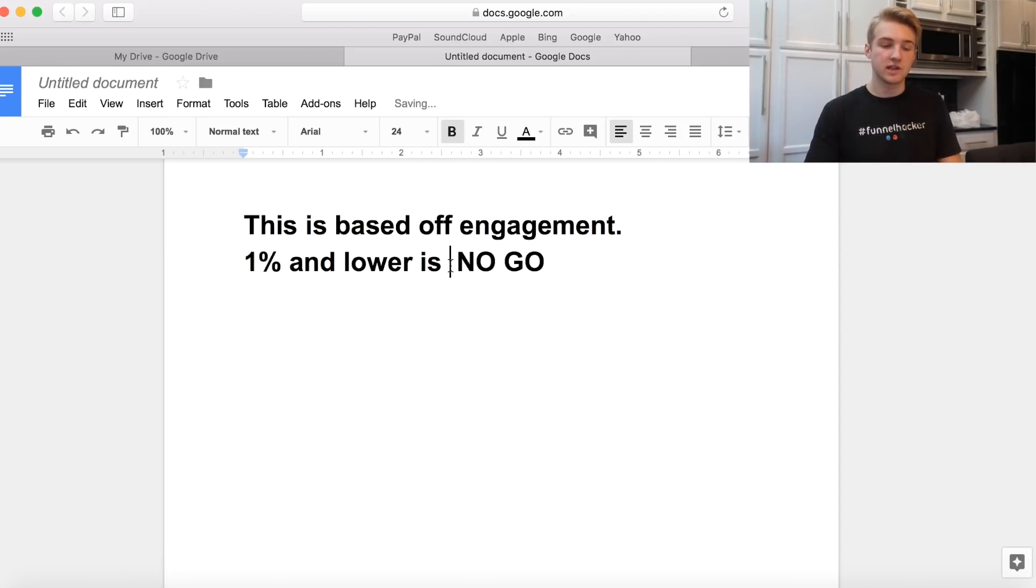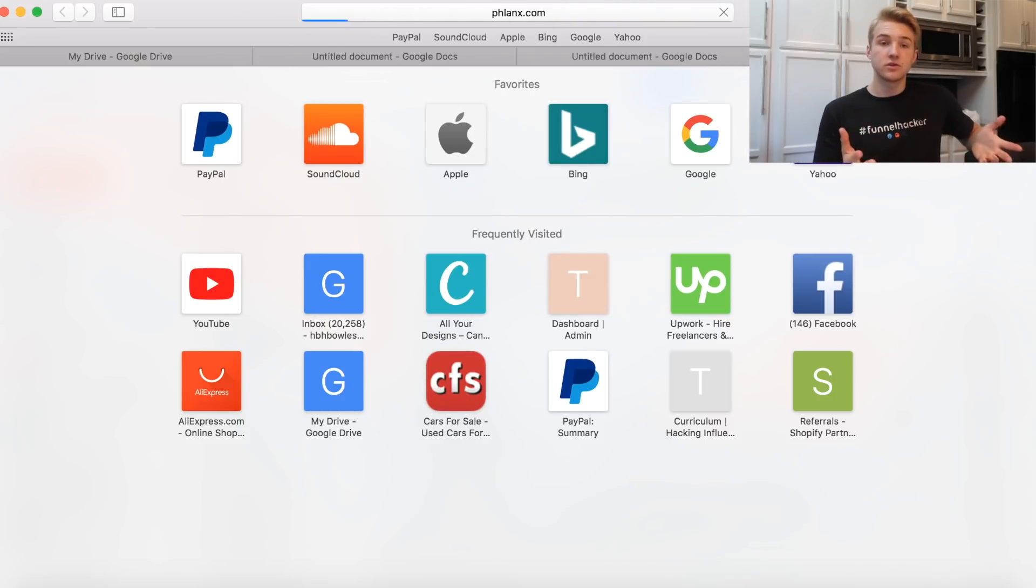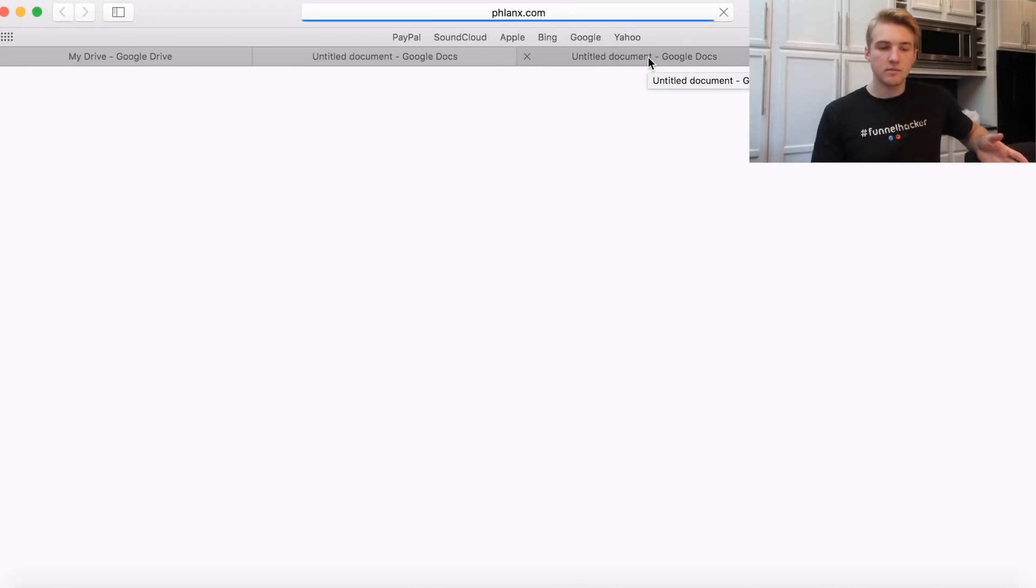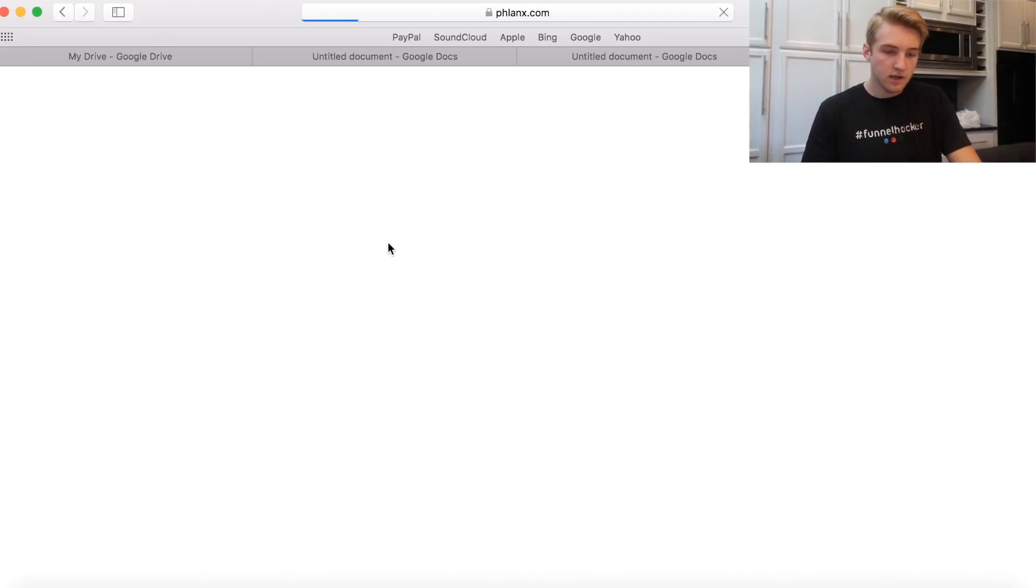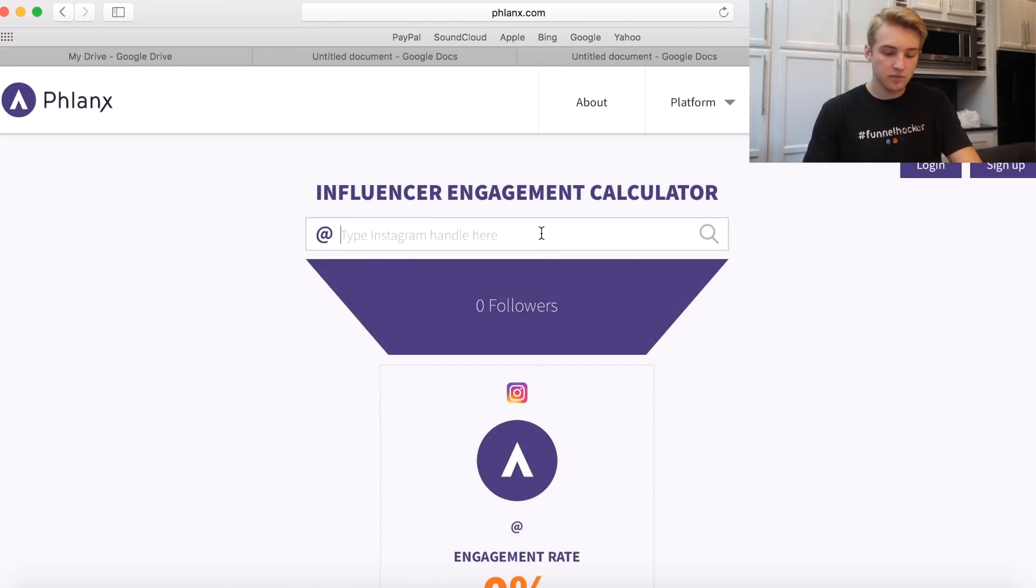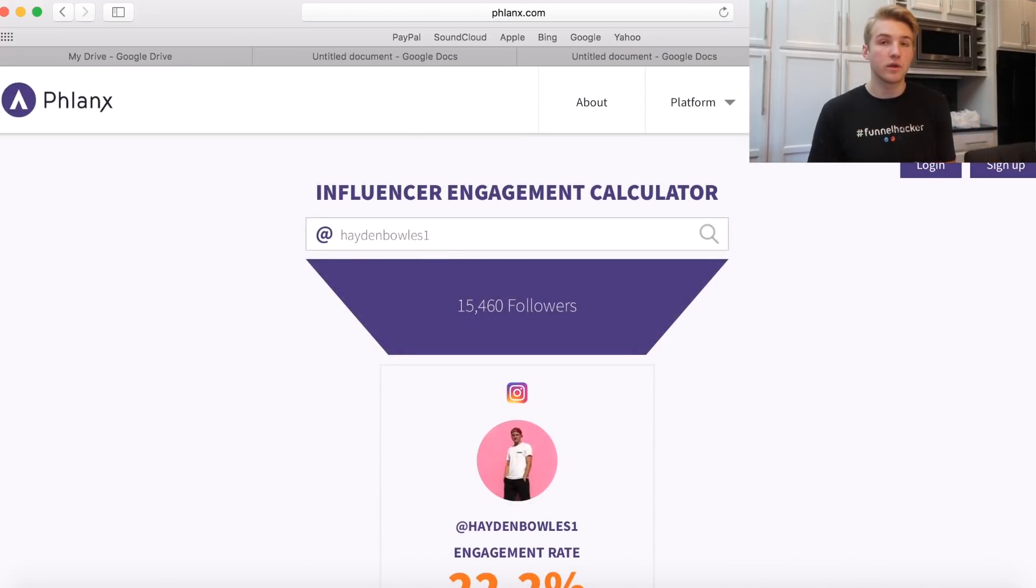To determine this, we use the website Flanks.com. You simply enter the username for the Instagram account that you want to look at. If you just click platform in the upper right, you can hit engagement calculator. Simply enter the username of the page. Let me show you an example. Let's just go with my page.